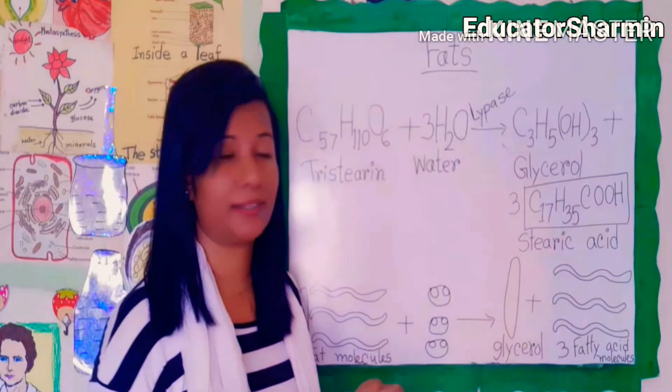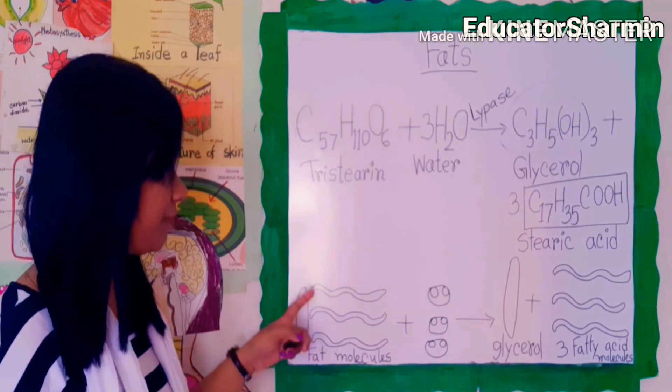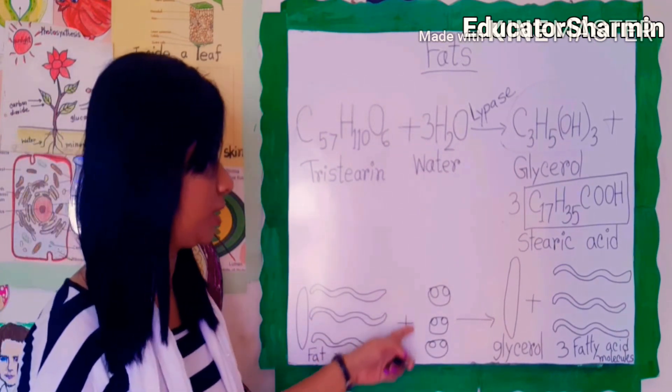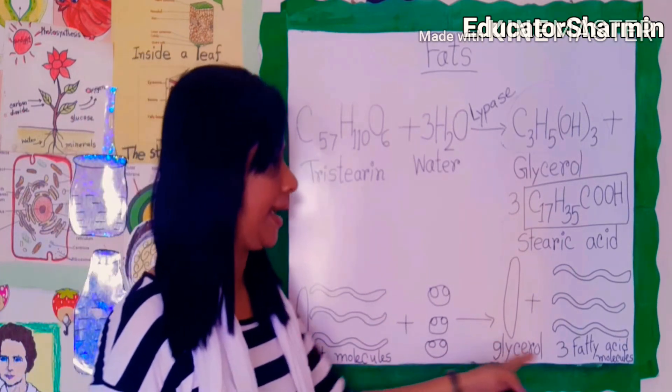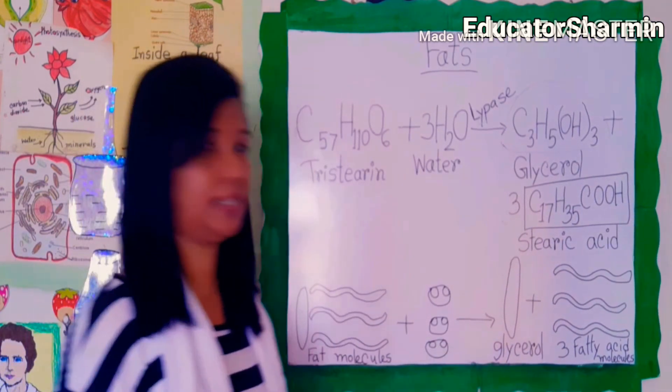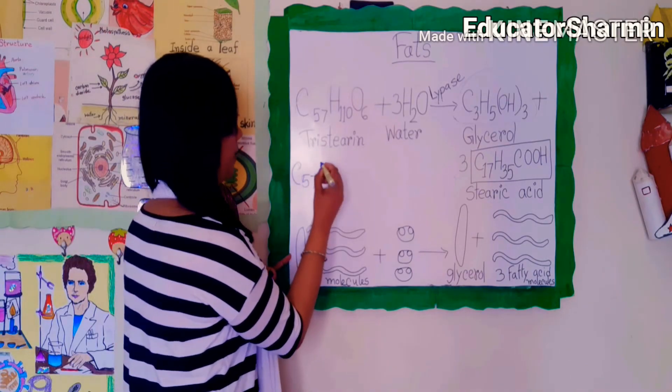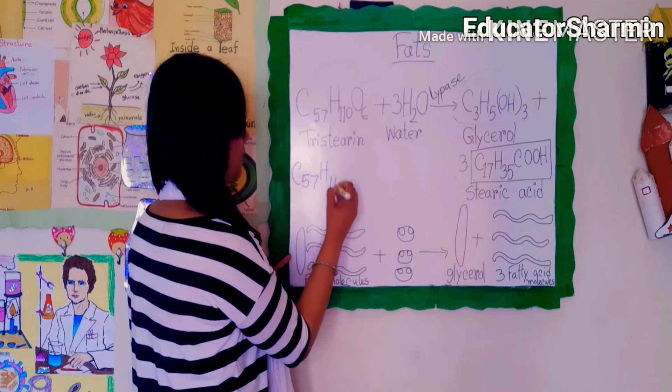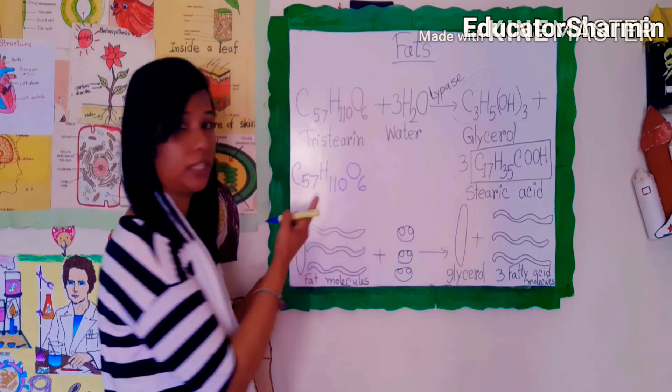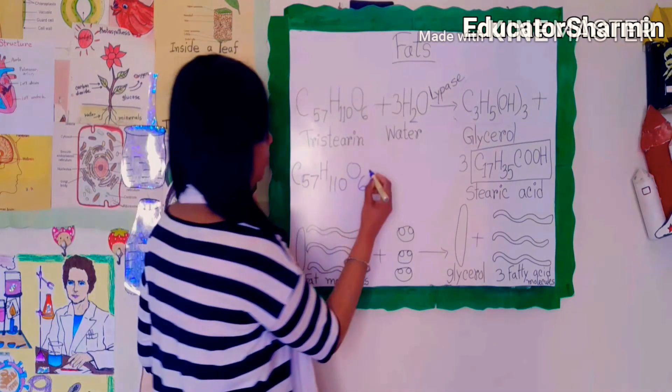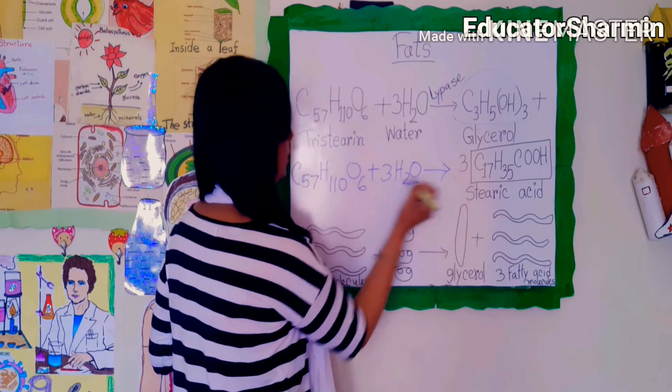The enzyme is lipase. Here is a fat molecule and here are three water molecules. It produces glycerol and three fatty acids. C57H110O6 - that's the hydrogen 110 and six oxygen - with three water molecules.